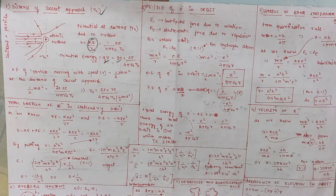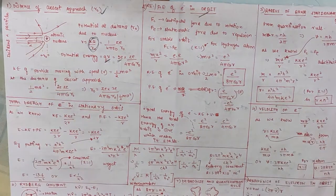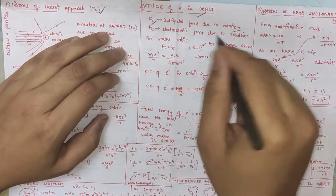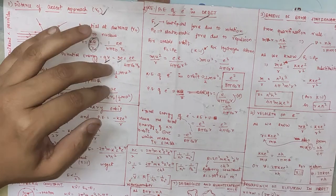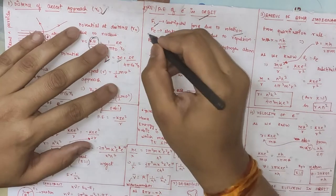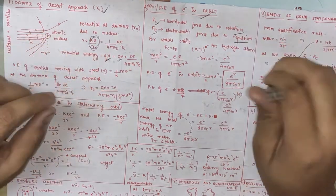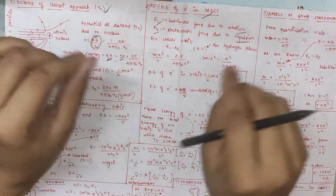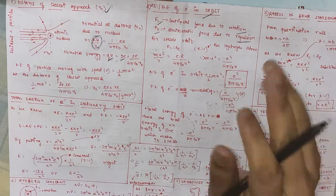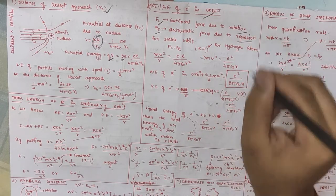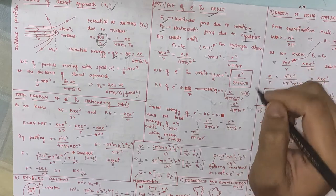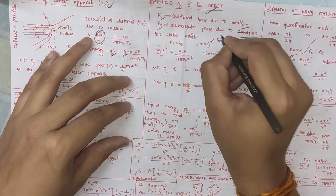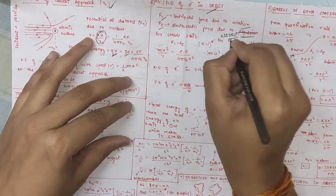Now we have the potential energy of electrons in an orbit. I will use two terms: Fc, which is the centripetal force due to rotation, and FE, which is the electrostatic force. Here the electron is rotating around the nucleus, so it has a centripetal force directed inward. The electrostatic force between electron and proton is attraction — not repulsion — because electrons are orbiting around the nucleus.